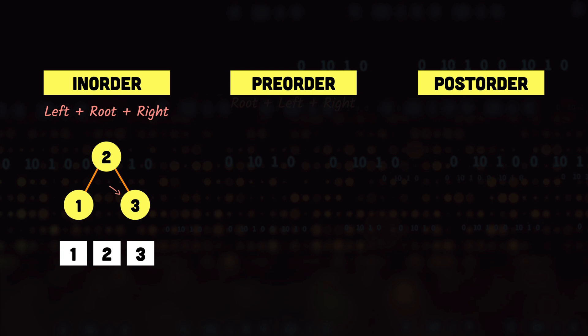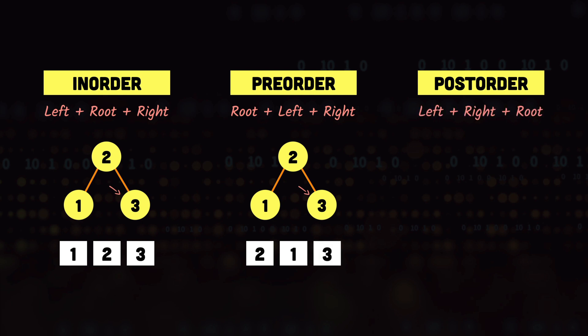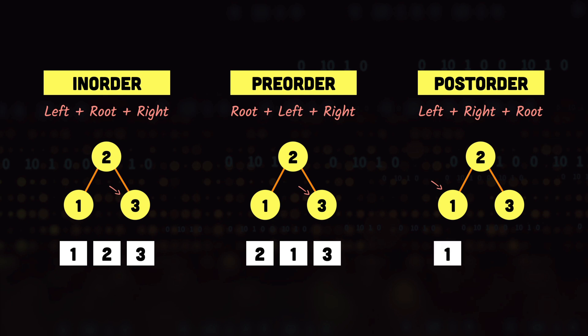In preorder traversal, we visit the root node first, then the left node, then the right node. So for this tree we get 2, then 1, then 3. In postorder traversal, we visit the left node first, then the right node, then the root node. So in this example we get 1, then 3, then 2.